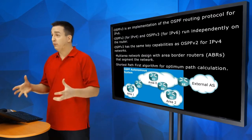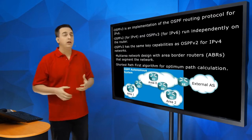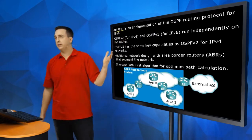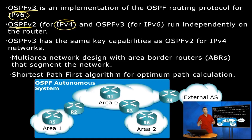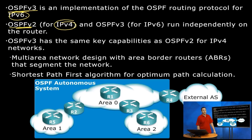We need routing protocols that can support IPv6. If you plan on deploying IPv6 and you're using OSPF, you will be looking at OSPFv3. OSPFv3 simply means it's for IPv6. OSPFv2 is for IPv4. These are completely different routing processes — they do not talk to each other or intermingle, meaning you can run them both at the exact same time on your router.